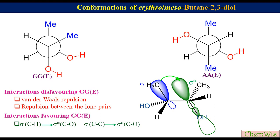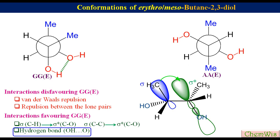The second stabilizing interaction is a hydrogen bond interaction between the two hydroxyl groups. Because of these two stabilizing interactions — especially the hydrogen bond interaction — the GGE conformation is more stable than AAE in low polar media.